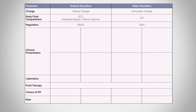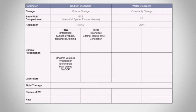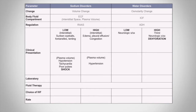Sodium or volume disorders usually affect the ECF, which is composed of the interstitial space and plasma volume. Therefore, the clinical presentation will be dermatologic and/or cardiovascular — from sunken eyeballs and edema to hypotension or even hypertension. For water disorders, it is usually the ICF that is affected, and since the brain is primarily water, the clinical presentation of osmolarity problems is usually neurologic in manifestation, with thirst as an important symptom.